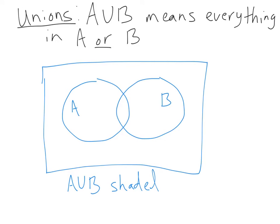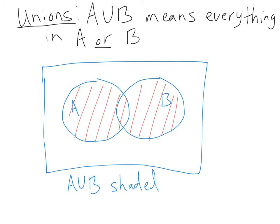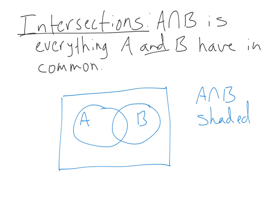Alright, that was complements. Now let's talk about unions — some basic set theory. A union B, written with a big U, means everything in A or B: you take all of A and all of B and put it all together. Shading A union B covers all of A, the middle overlap, and all of B. Intersections use an upside-down U: A intersect B stands for everything A and B have in common. Shading A intersect B gives just the overlap — everything that's in both A and B at the same time.